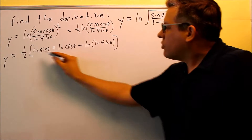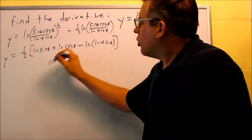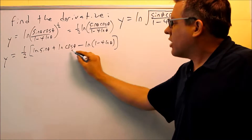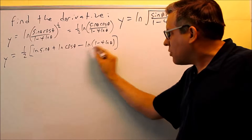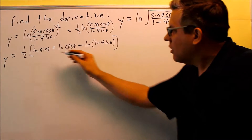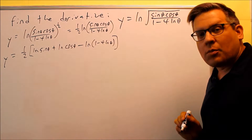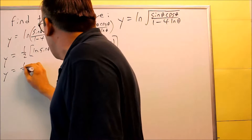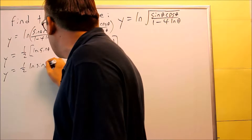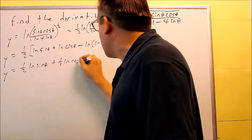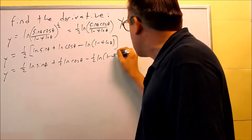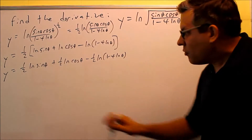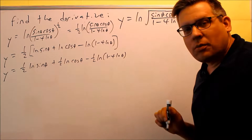The two things on top were positive, and then minus because the last one is on the bottom — that's the correct way to break it up using log properties. We can then multiply all that through by 1/2, giving us: 1/2 ln(sin θ) + 1/2 ln(cos θ) − 1/2 ln(1 − 4 ln θ). Now I'm ready to take the derivative because I have it broken up into three separate terms.